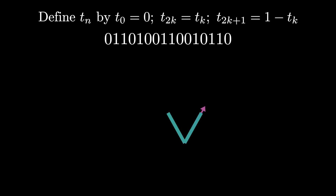Every time we see a zero, we'll take a step forward, and every time we see a 1, we'll rotate 60 degrees counterclockwise.